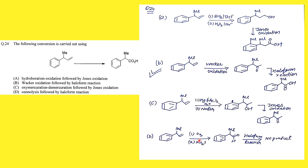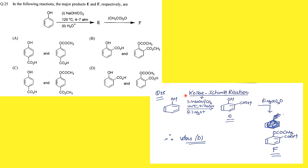Ozonolysis gives aldehydes. This is the Kolbe-Schmitt reaction: you create salicylic acid and then convert it. Salicylic acid is the precursor and we know that its acetylated product is aspirin. So the name reaction asked here is the Kolbe-Schmitt reaction, and the correct option is D.